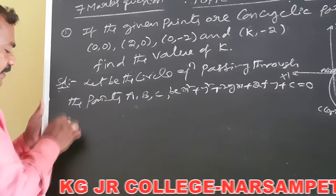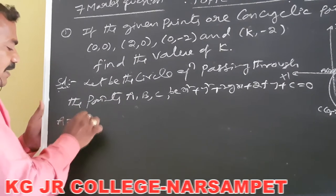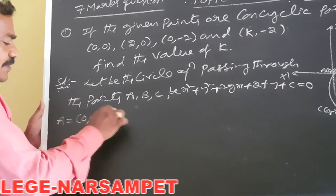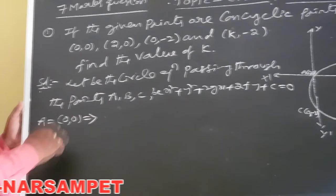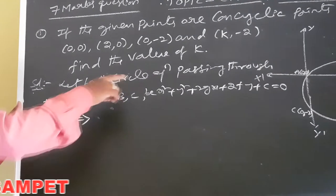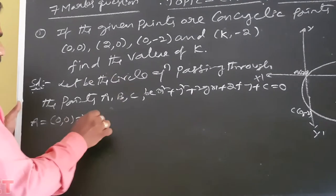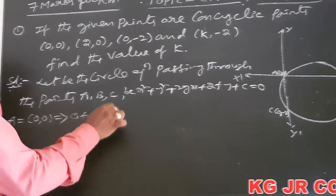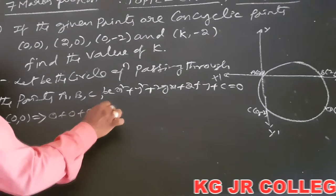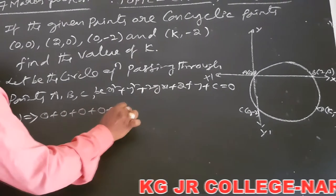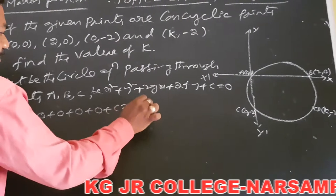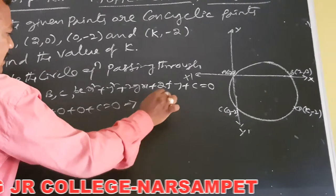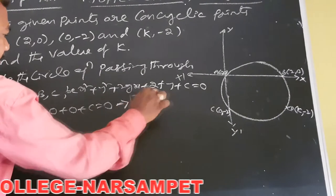Now A=(0,0). Putting x=0, y=0 into the circle equation, we get c=0. So one of the values is c=0.